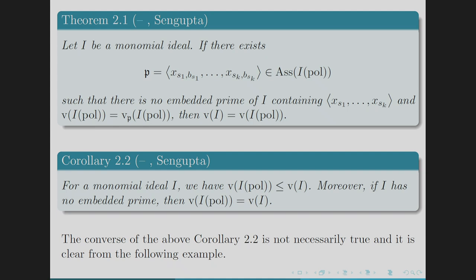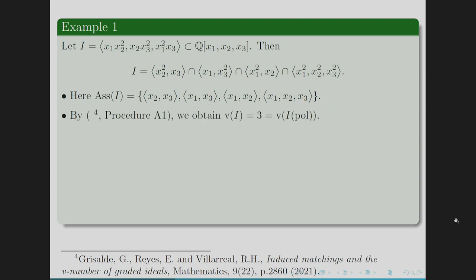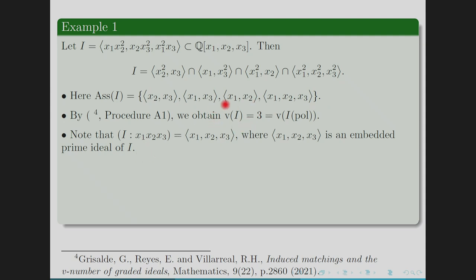The converse of Corollary 2.2 is not true: V(I^pol) can equal V(I) even when I has embedded primes, as shown by an example. Here I is a monomial ideal with associated primes X2, X3; X1, X3; X1, X2, X3; and X3, where X1, X2, X3 is not an embedded prime. We compute V(I) = V(I^pol) = 3, since I colon X1*X2*X3 equals the ideal (X1, X2, X3), and there is no embedded prime of I containing (X1, X2, X3).